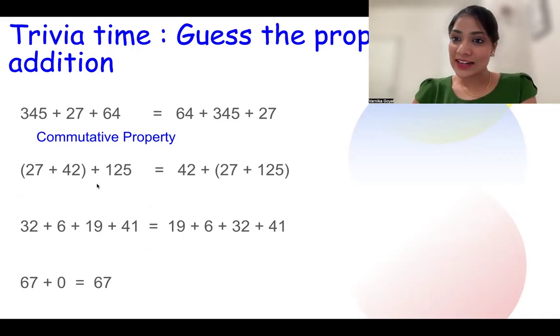Let's look at another example. In this example, what do I see? The addends are the same, but the grouping is different. On this side, it is (27 + 42) being grouped together and then being added to 125. While on the right side, 27 + 125 and then 42 is being added. The grouping has changed, but it will not change our sum. This is associative property.